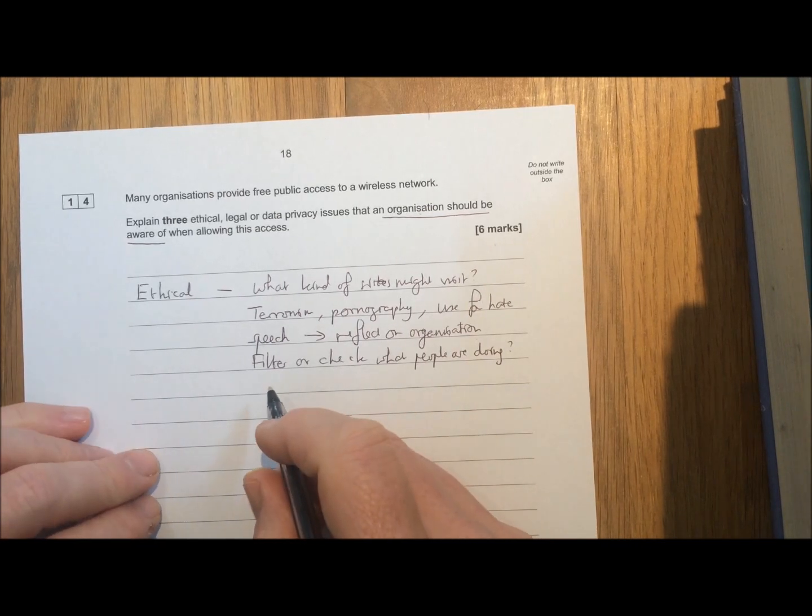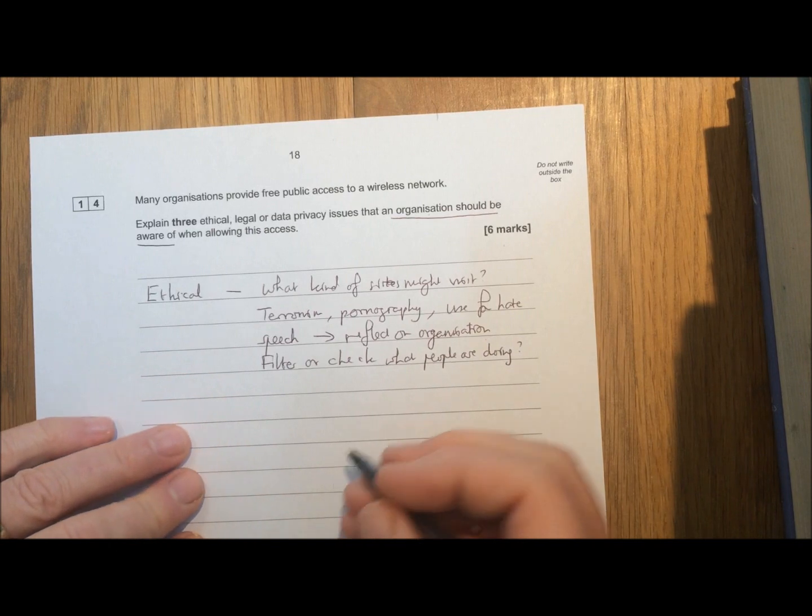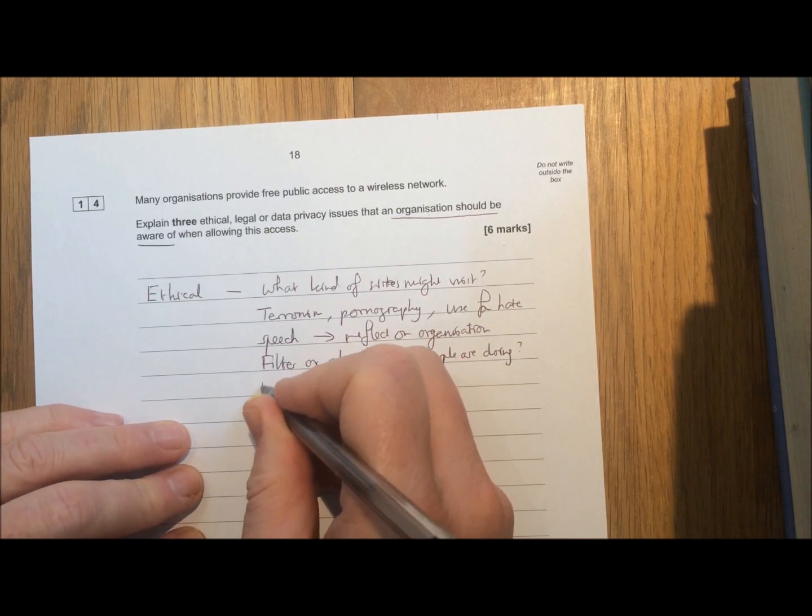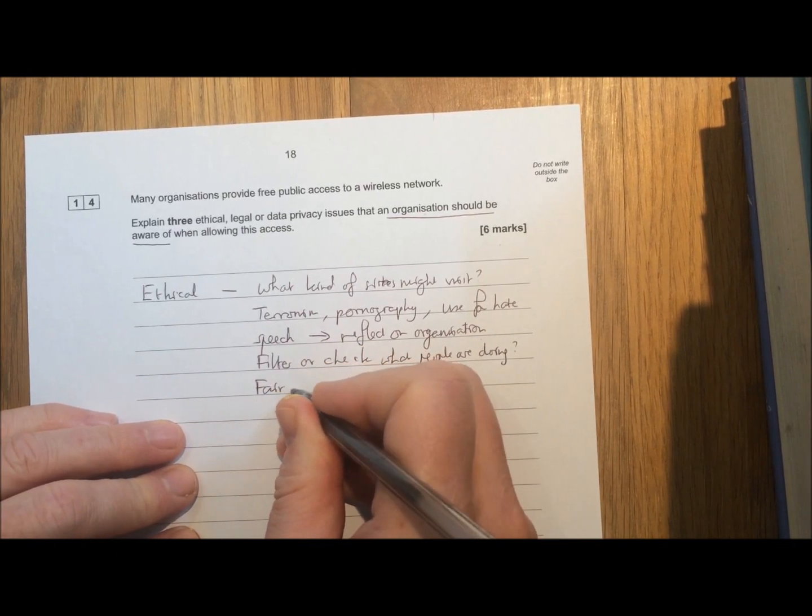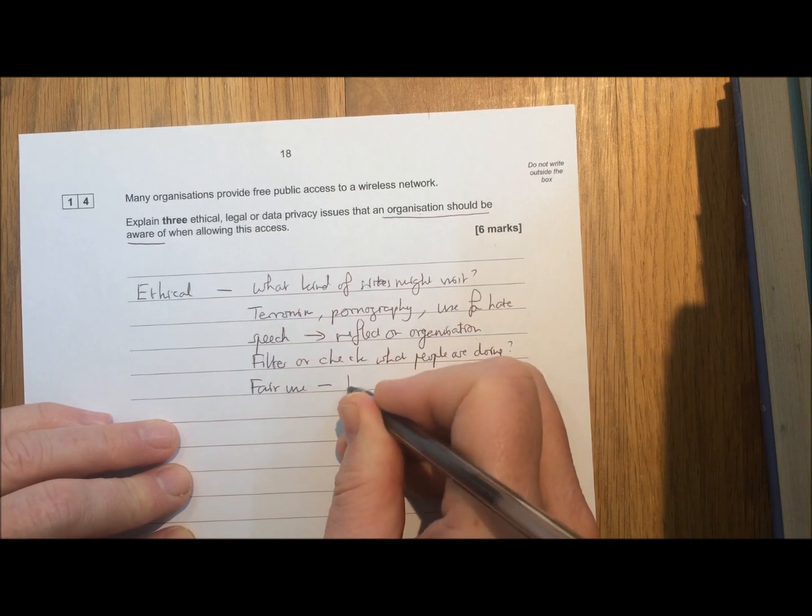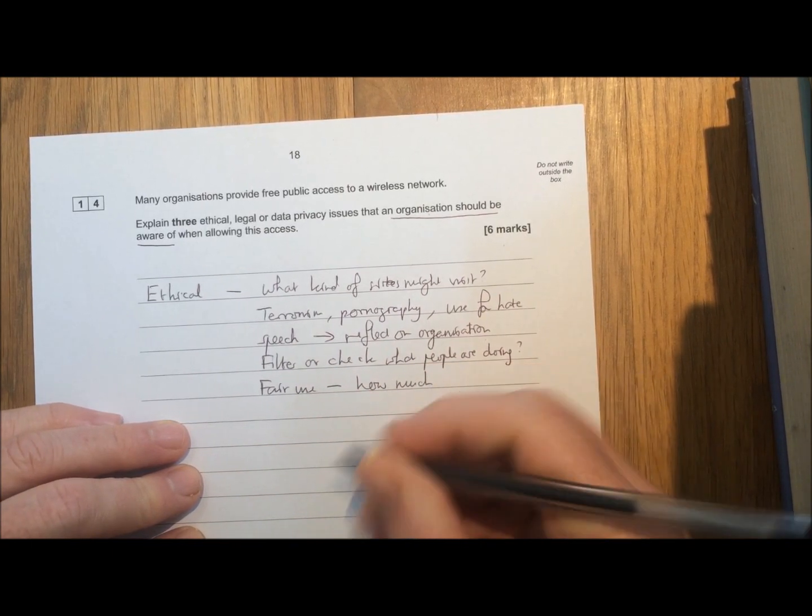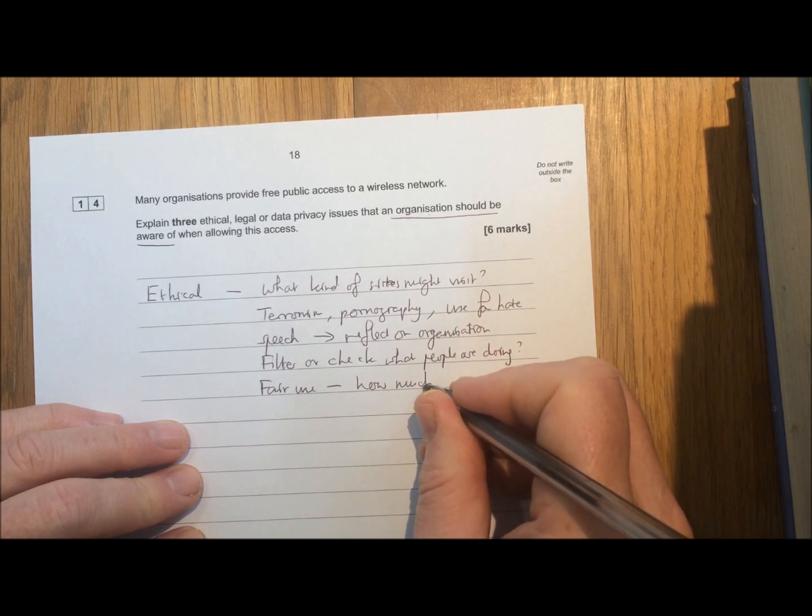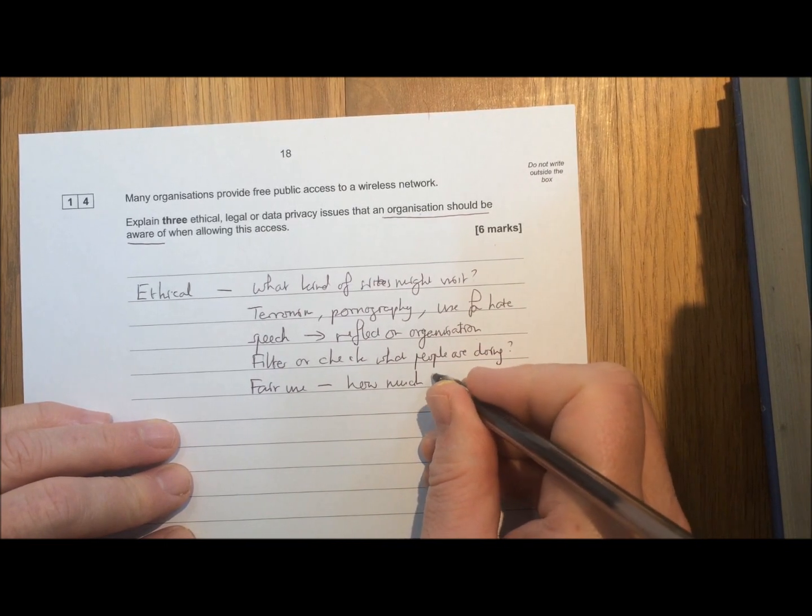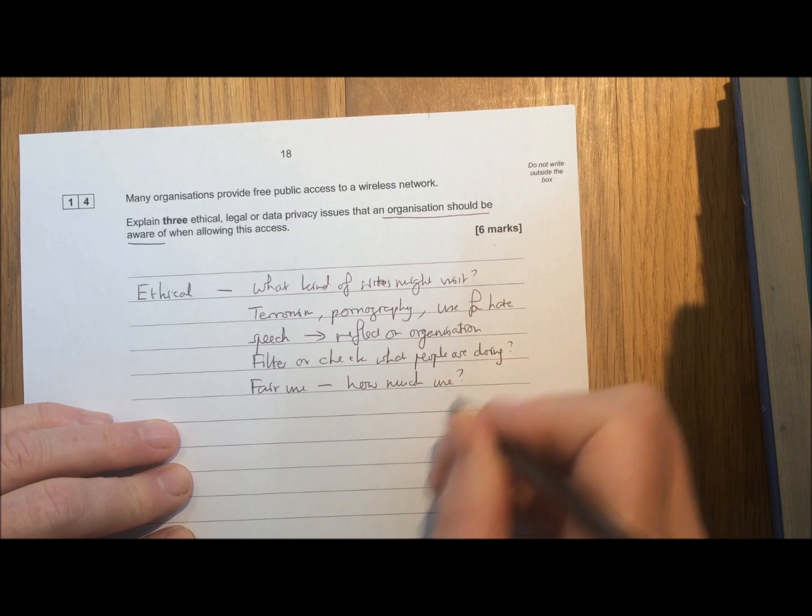the approach to right and wrong. Another ethical one you might want to think about is fair use. How much are people using it? Are they monopolising it? Are they taking over what's there? How much use can we allow people?